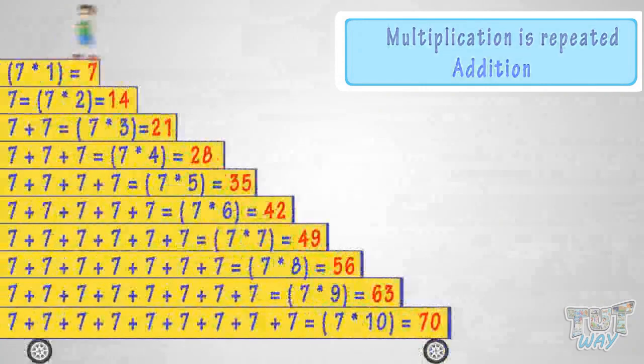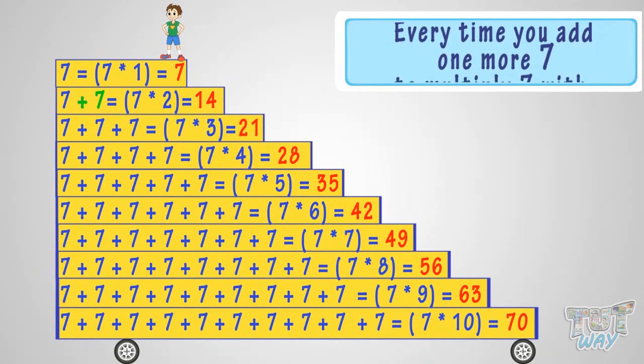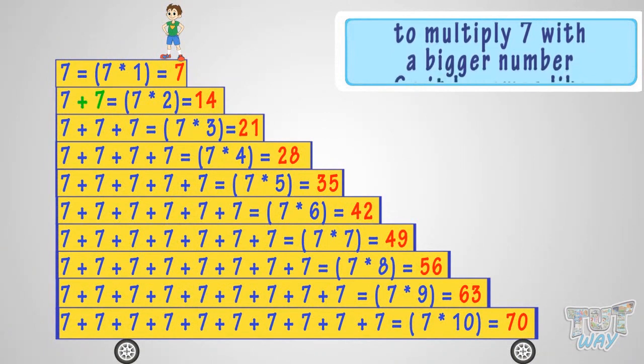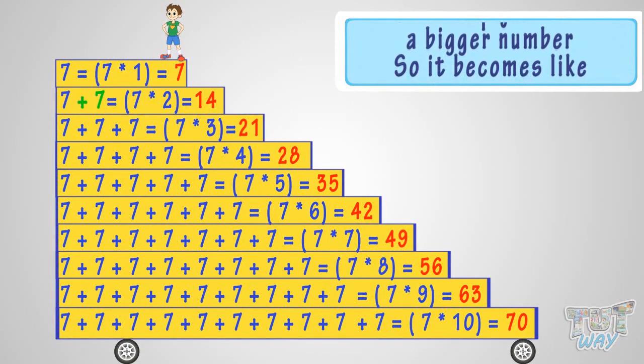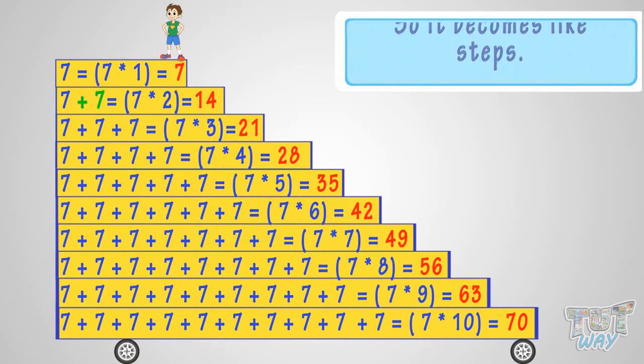Good! So, what have we learned? We have learned that multiplication is repeated addition. See the figure. Every time you add one more 7 to multiply 7 with a bigger number, it becomes like steps.